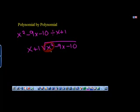If I want to know how many times x goes into x squared, I believe that will be x. I then take my x here and multiply it by x plus 1, and I get x squared plus x.